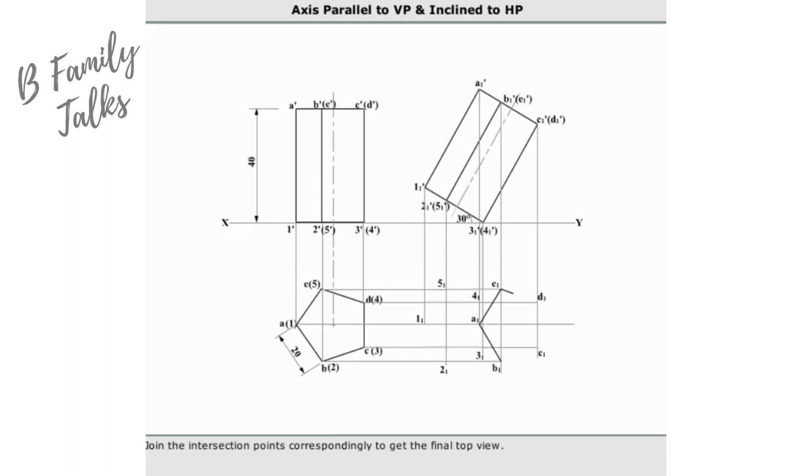Join the intersection points correspondingly to get the final top view. Draw the visible edges by thick continuous lines and invisible edges by thick dotted lines.